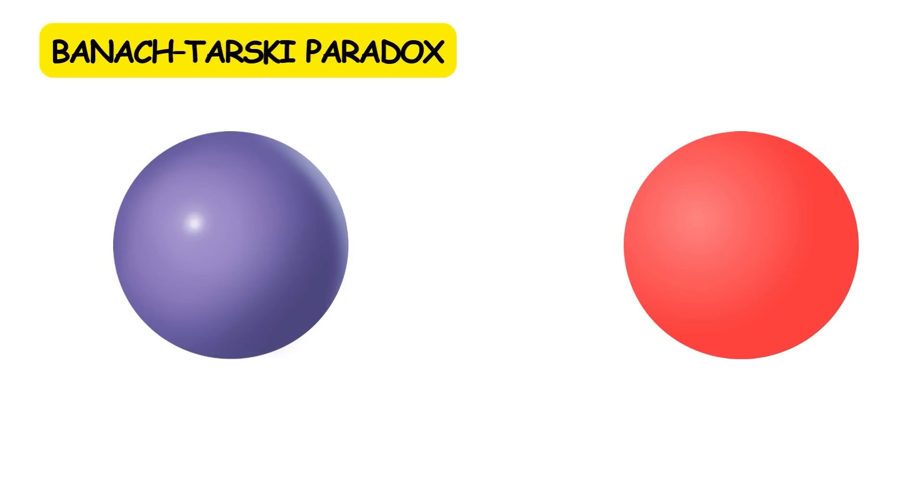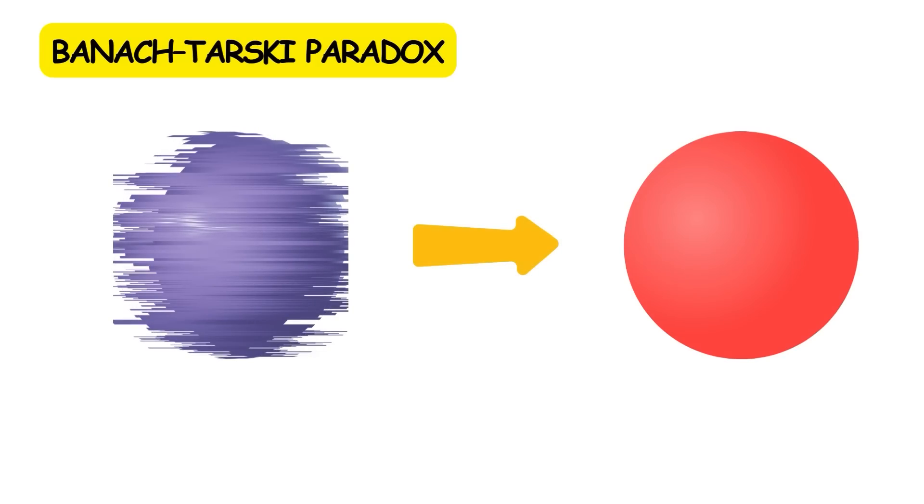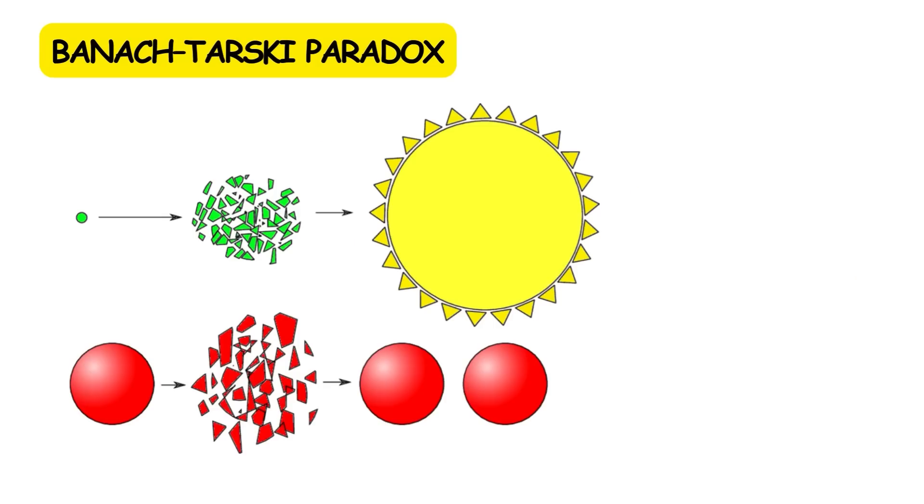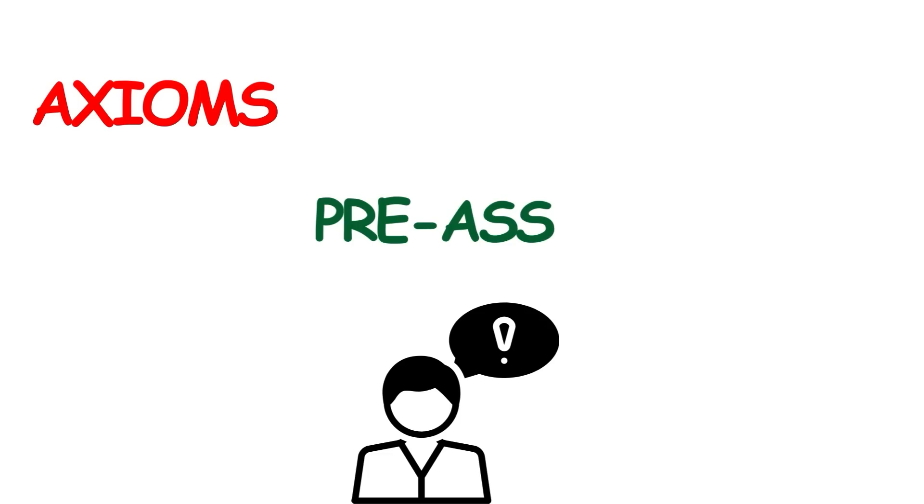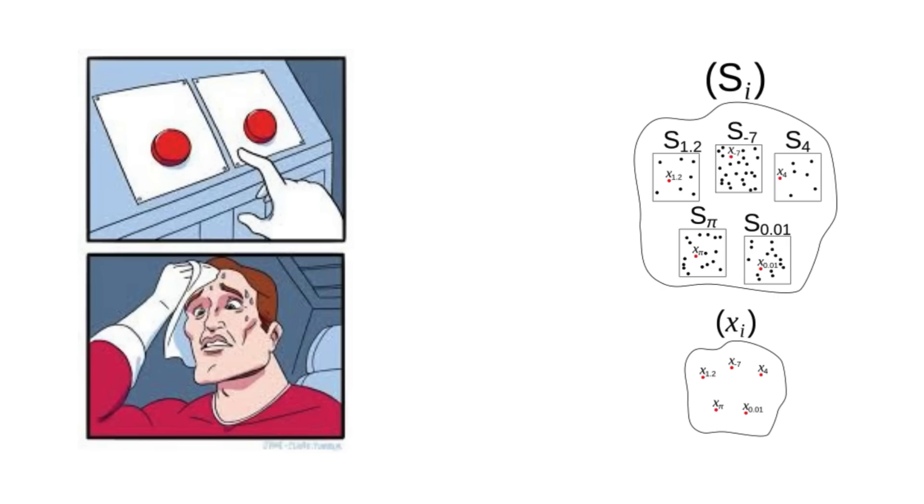Additionally, for any two reasonable solids, either one can be chopped up and rearranged into the other. This theorem is often illustrated with a pea and the Sun, and therefore called the Pea and the Sun Paradox. In order for this theorem to be true, our axioms, or pre-assumed facts, must be carefully chosen. In particular, this theorem relies on the axiom of choice.